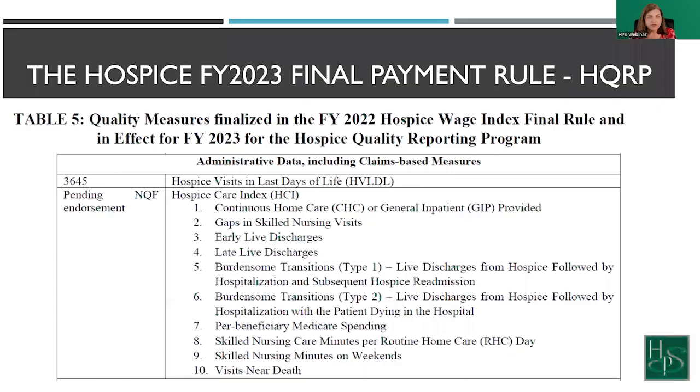In addition, the hospice care index has become a lot of information to absorb — a calculation that will be reported publicly to help patients and family members make decisions about hospices that will care for their patient. As we look at this, I want to share with you a screen that shows you the 10 components of this calculation of the hospice care index. These items are each individually calculated based on your claims data. This information does not come from any other place like HIS, cost reports — it comes directly from your claims data.